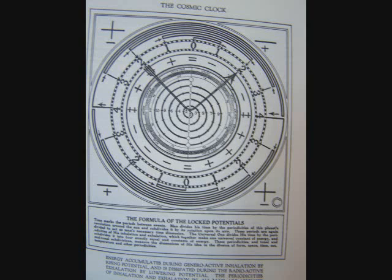Now to read the fine print under this chart called the Cosmic Clock. The formula of the locked potentials: Time marks the periods between events. Man divides his time by the periodicities of his planet's revolution around the sun and subdivides it by its rotation upon its axis. These periods are again divided to act as man's necessary time dimensions.